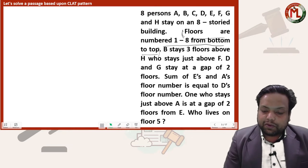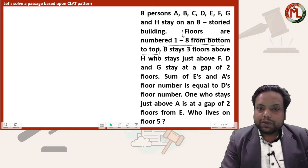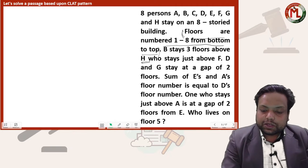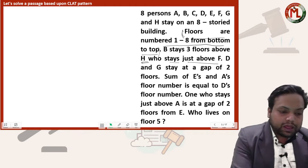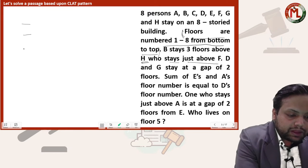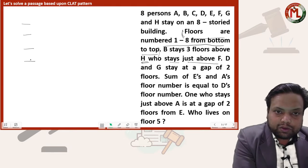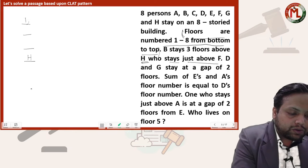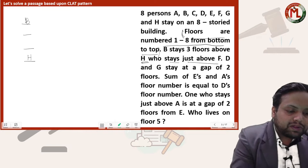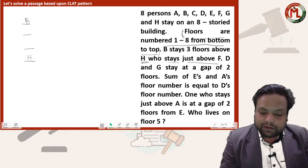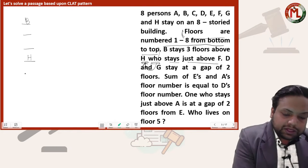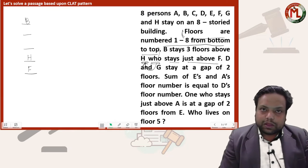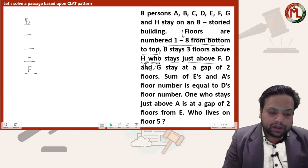The first clue: B stays three floors above H, who stays just above F. So the 'who' here refers to H — H is staying just above F. This is our first information: F, then H just above F, and then B three floors above H.